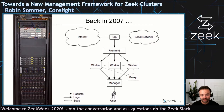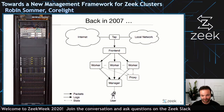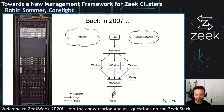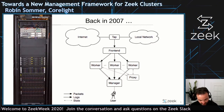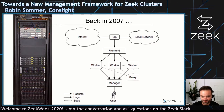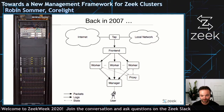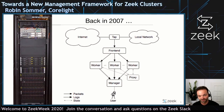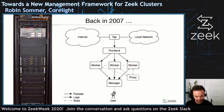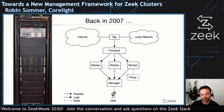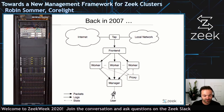This load balancing approach was originally meant for separate systems — back in those days there would be one Zeek instance per system and the systems would be communicating. These days, the more typical setup is a single-box cluster. So there are a bunch of worker processes all running on the same system, but still coordinating. The setup and approach behind the scenes is exactly the same, no matter if it's a single system or multiple.